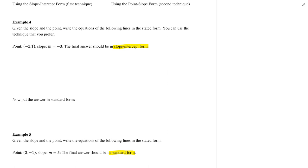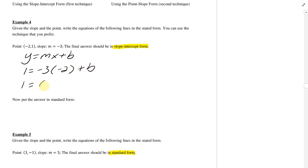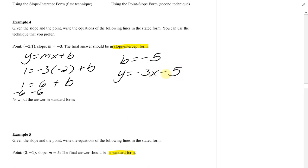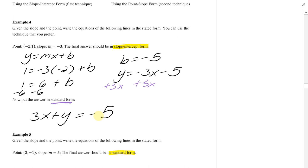For this one, I'll use the slope-intercept form: y equals mx plus b, plugging in 1 for y, negative 3 for m, and negative 2 for x, solving for b. This gives 6 plus b, subtract off the 6 so b equals negative 5. Since I needed slope-intercept form anyway, this comes out to y equals negative 3x minus 5. Now, to put this into standard form, you need x and y on the same side. Add the 3x to the other side: 3x plus y equals negative 5.